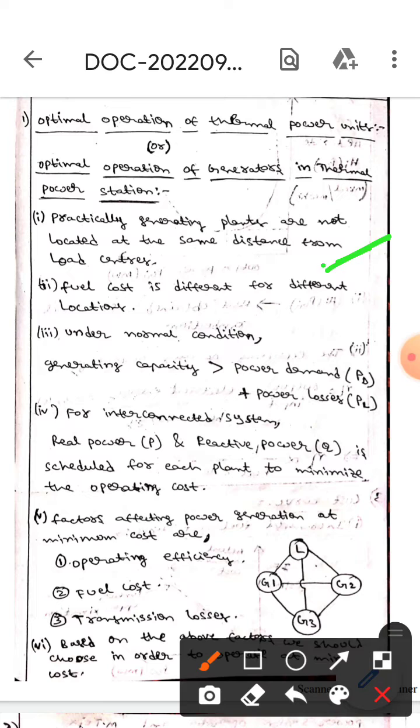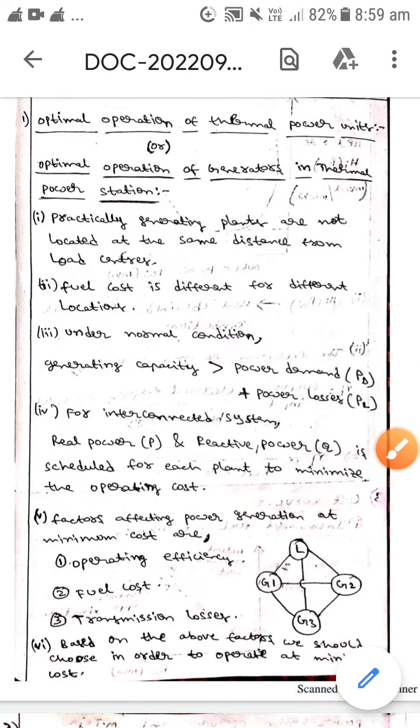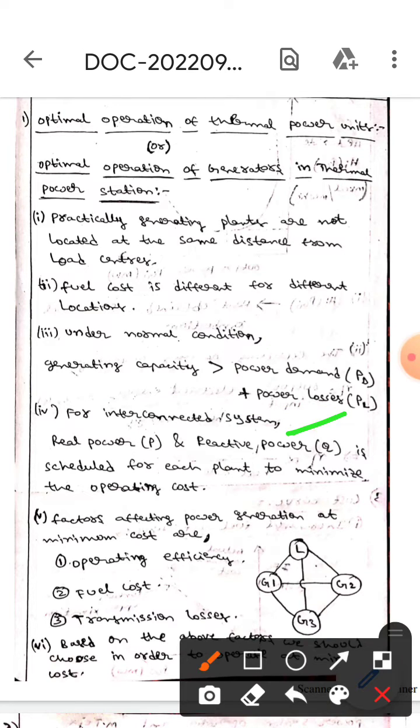Usually under normal condition, generating capacity is greater than power demand plus power losses. Whereas for interconnected system, real power P and reactive power Q is scheduled for each plant in order to minimize the operating cost. Observe this diagram.